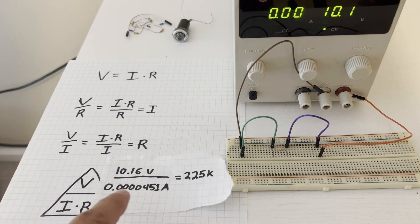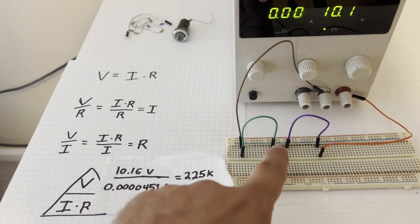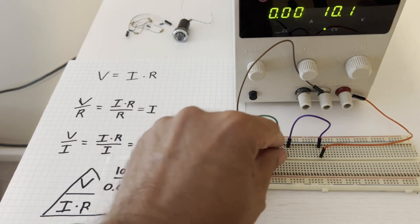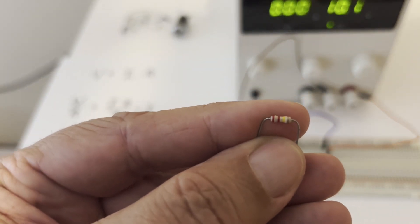So earlier we measured a volts of 10.16 across our resistor and a current of 451 microamps. So that means our resistor was 225k. Is that resistor? If we go ahead and look at that resistor, you'll see that it's red, red, yellow, which is 220k.